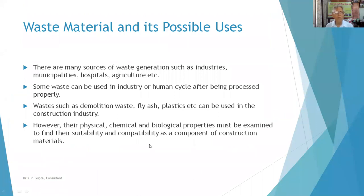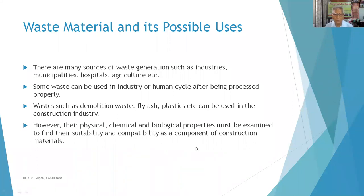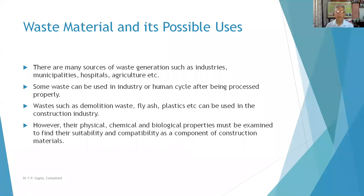Many sources of waste generation such as industries, municipalities, and agriculture can be used in industry or recycled after being properly processed. Demolition waste, fly ash, plastics, etc., can be used in the construction industry. However, the physical, chemical, and biological properties must be examined to find the suitability and compatibility of the waste with the required materials.